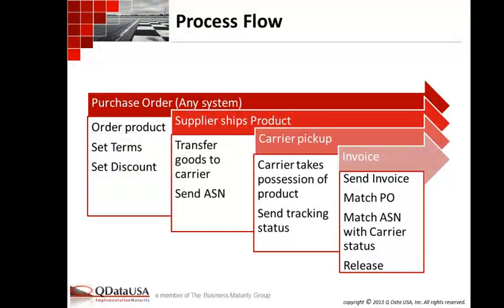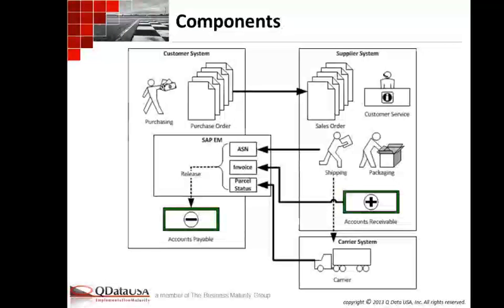The overview: purchase order placed, terms and distance set. The supplier ships the product and transfers goods to the carrier, then sends us an ASN with carrier tracking numbers. The carrier picks it up — taking possession — and sends us tracking status. On the invoice side: the supplier sends us the invoice, it matches the PO, it matches the ASN with the carrier status, and then we can release the invoice. The enablers were event management, EDI-enabled ASN from the supplier, and EDI-enabled status notification from the carrier.